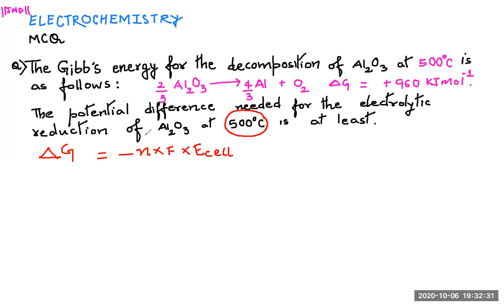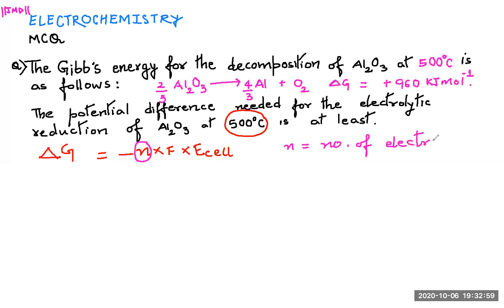The most important and quite difficult part is finding the number of electrons, n. I will pick up this equation to calculate n. N is simply the number of electrons involved in the reaction, and I'll show you how to calculate it.